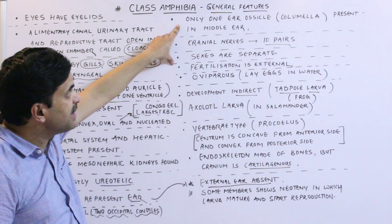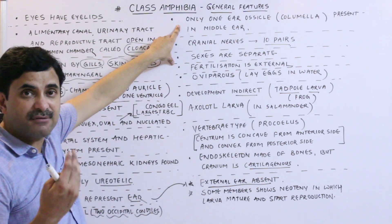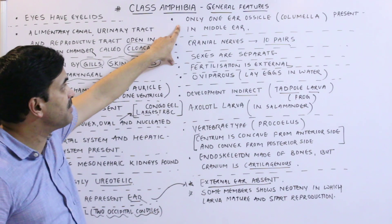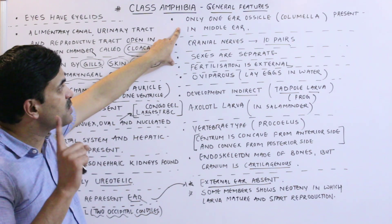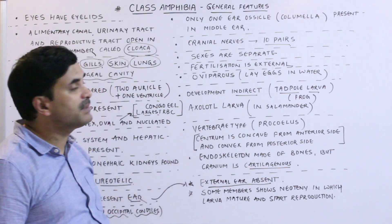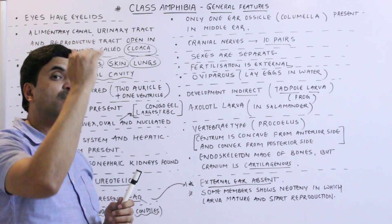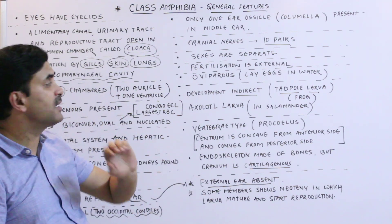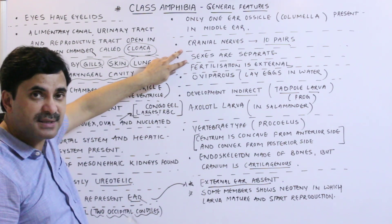Only one ear ossicle is present in the middle ear, called the columella. In human beings, we have three ear ossicles — malleus, incus, and stapes — but in amphibians the middle ear has only one ear ossicle. Regarding cranial nerves, amphibians have 10 pairs, whereas higher organisms including humans have 12 pairs of cranial nerves.